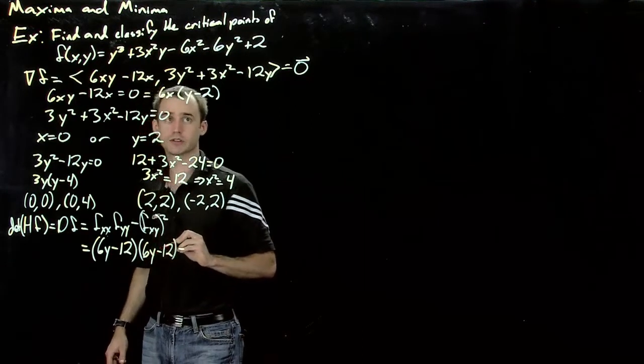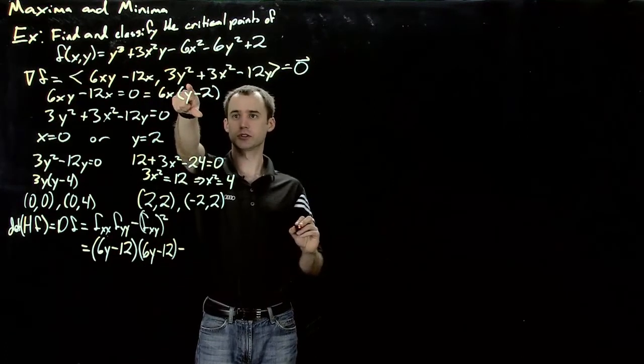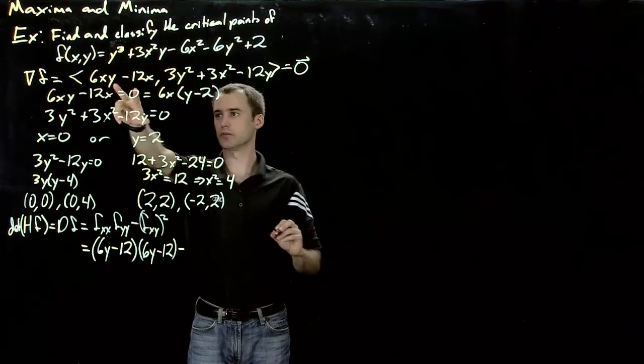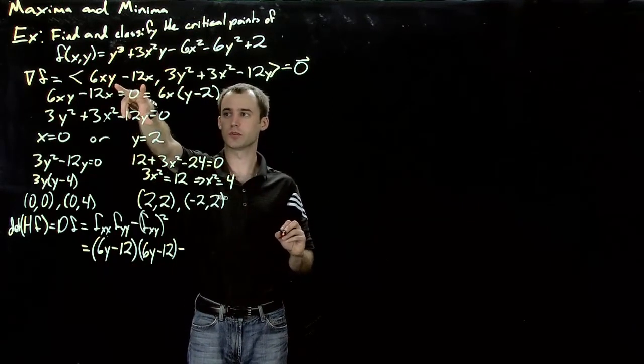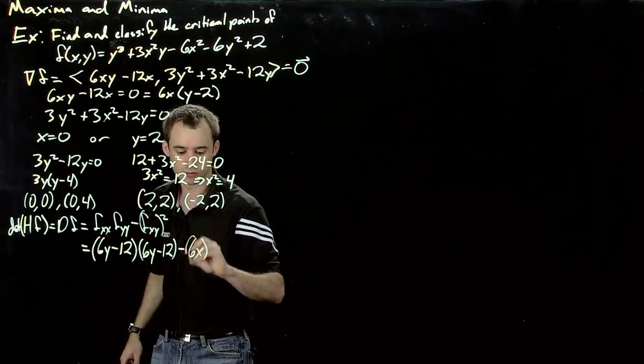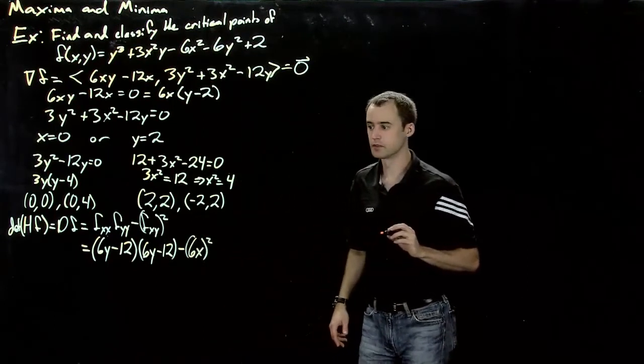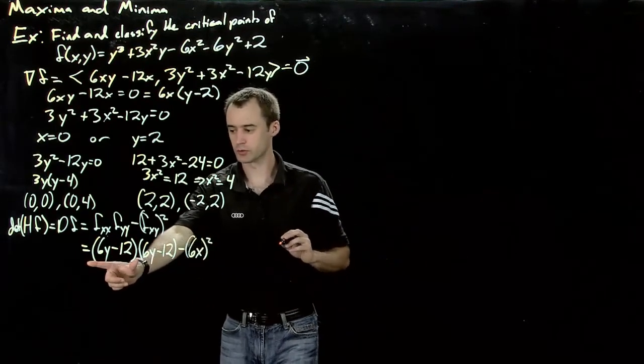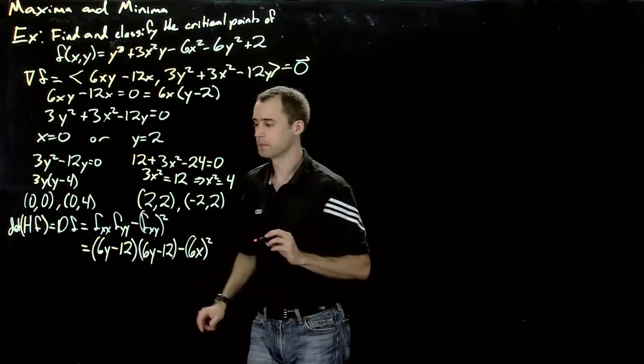So that would be 6y minus 12. And then I have to subtract the partial, the mixed partials. So this would be the derivative of, well, we might as well just use this guy. And take him, with respect to y, minus 6x squared. Okay, so that's our Hessian. And our second derivative with respect to x, our two derivatives of x, is this guy.